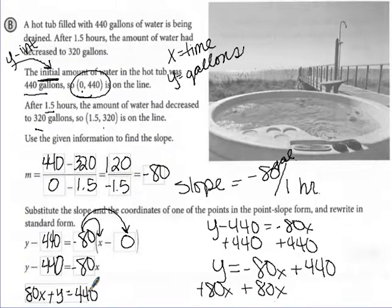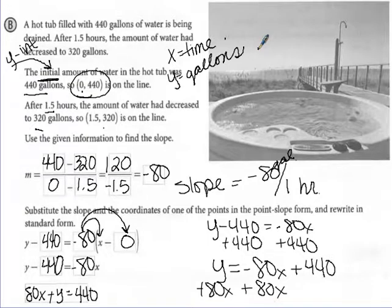You have a couple more Your Turn problems. For numbers 10 and 11, I want you to identify all of your pieces — what X represents, what Y represents, what the points are, and how to find the slope. If you need more space, grab an extra sheet of paper and staple it in. As always, if you have any questions, write them down or email me so we can go over them in class.